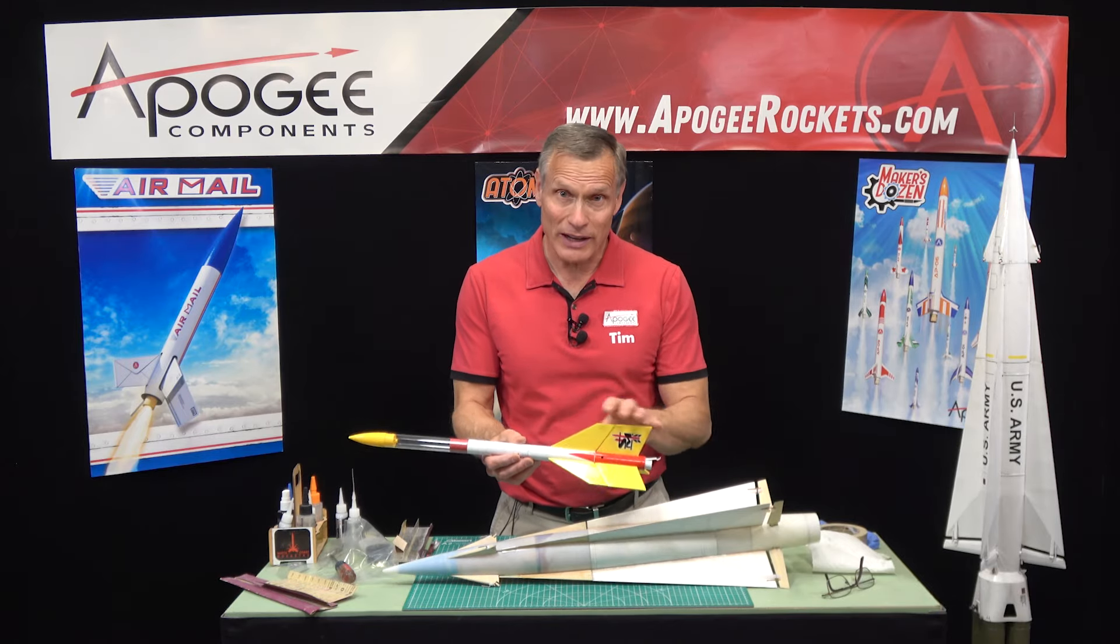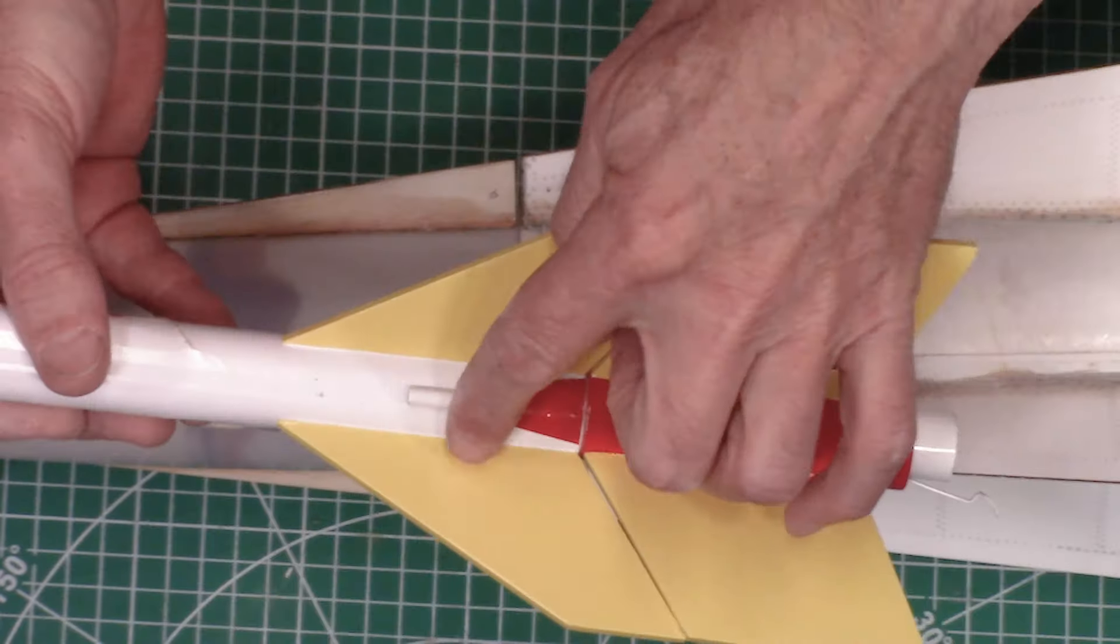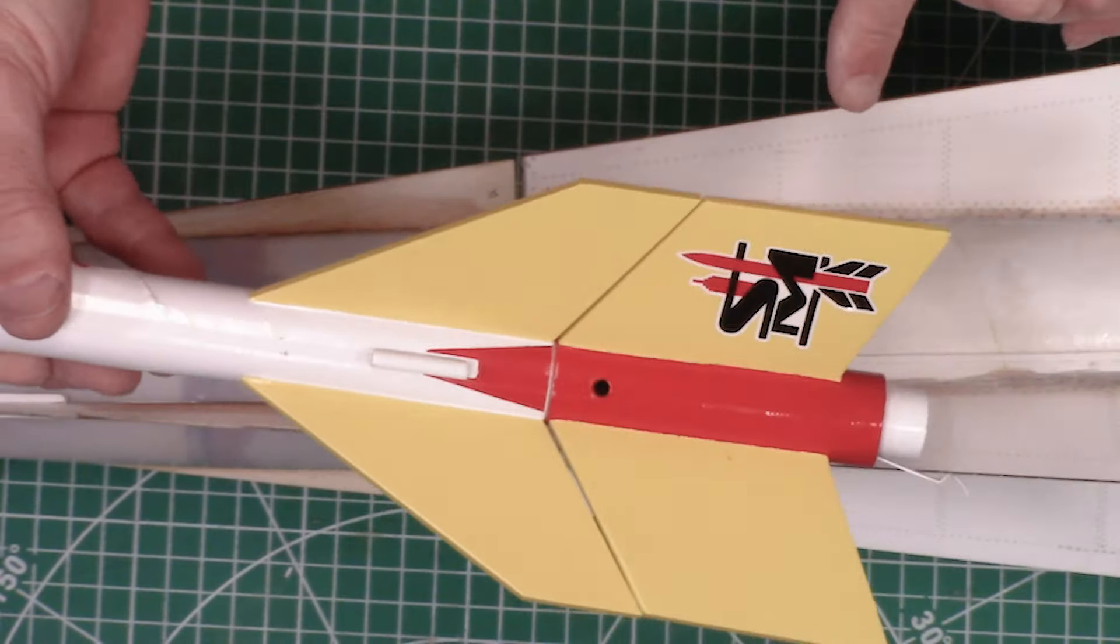Say you're putting together a rocket like a two-stage rocket like this where the fins nest between each other, and then you look down between the fins and you notice a gap between them where they're supposed to be nice and straight with no visible light that comes between the fins. So how do you fix this type of problem?